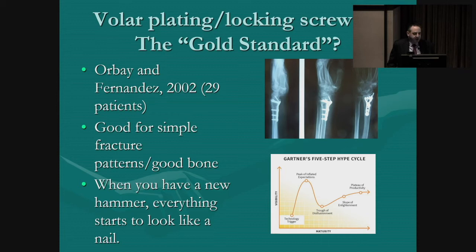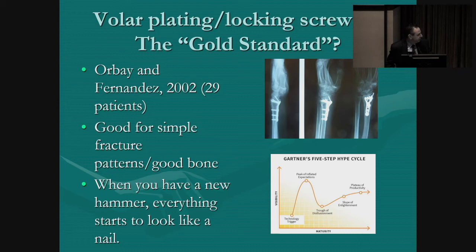Volar plating has become very popular and some people would consider it to be the gold standard. It was initially popularized by Orbe back in 2002 — he only published on 29 patients, but things took off. It works very well for simple fracture patterns with good bone, but as the old saying goes, when you have a new hammer, everything starts to look like a nail. We've probably gone past the point of inflated expectations and through the trough of disillusionment. There are some situations where this approach won't work.